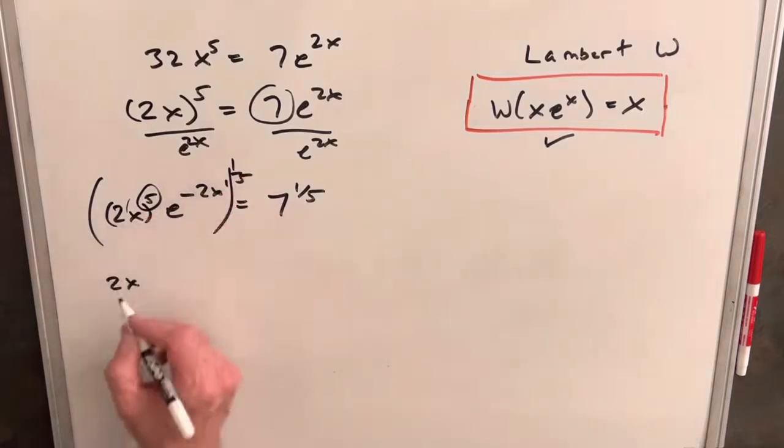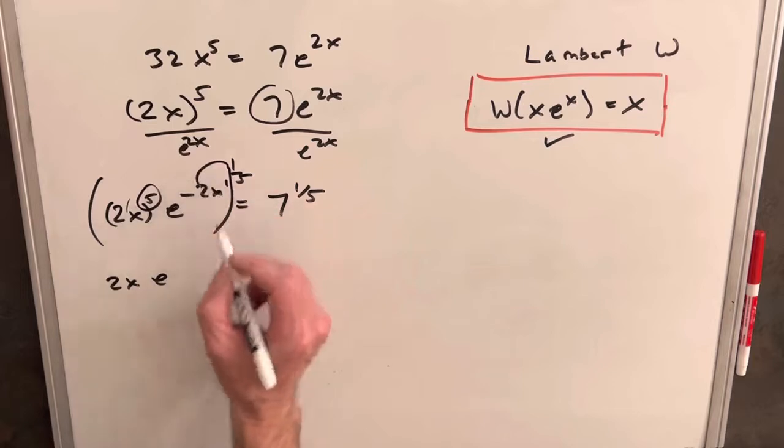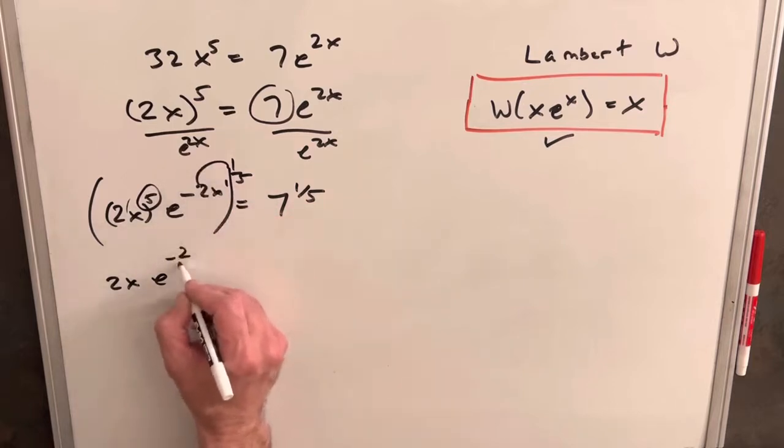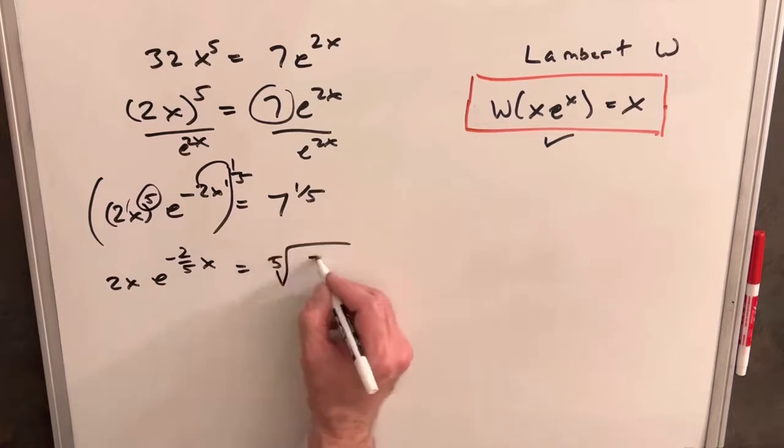Our 2x to the 5th to the 1/5th is just going to be 1. So we're just going to have 2x here, out front. And then we'll multiply this 1/5th on here. And we'll have e to the minus 2/5ths x, equals, you know, I'll just write it as the fifth root of 7.